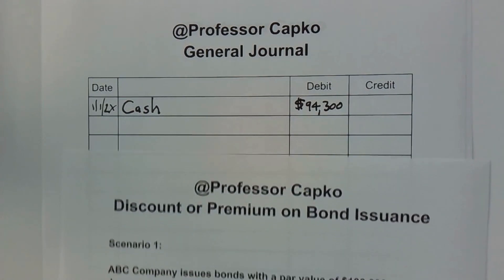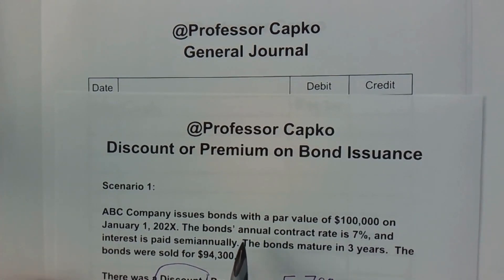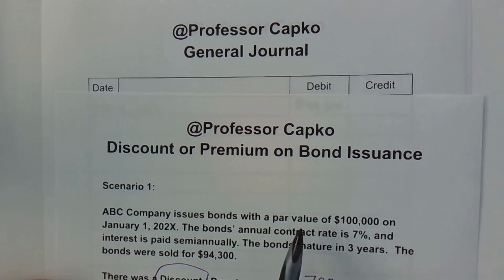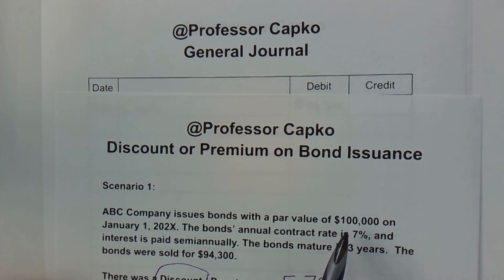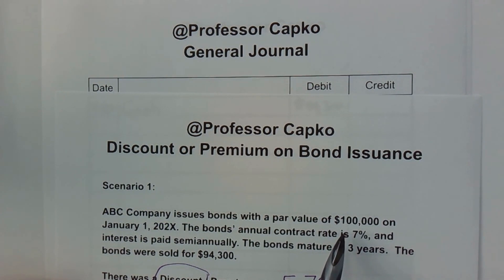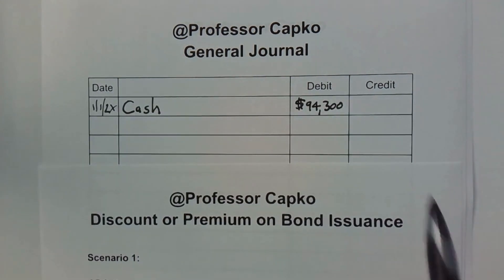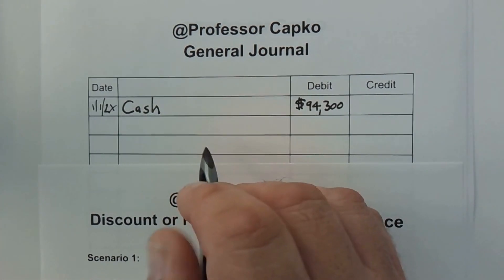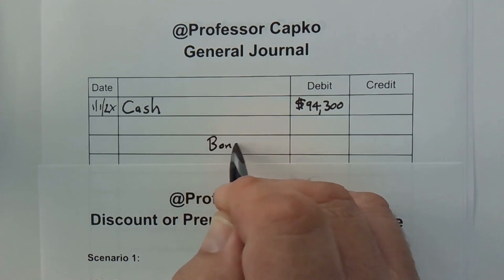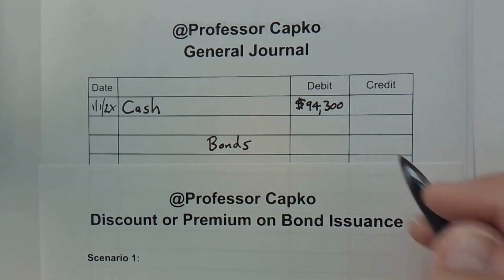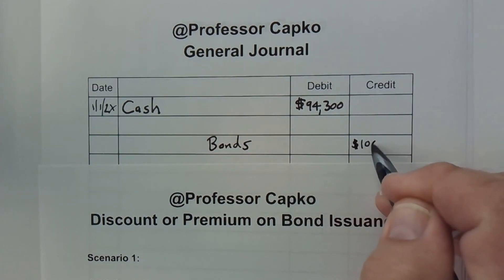Of course our debits and credits have to balance. We also know that the bonds were issued and they have a face value or par value — those terms are often interchangeable — of $100,000. That means we have a liability of $100,000 for the bonds. Since it's a liability and our liability just increased by $100,000, we're going to credit bonds payable for $100,000.